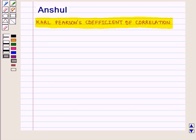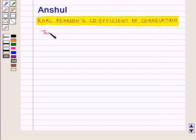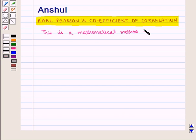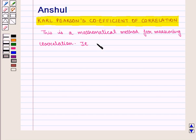Hello and welcome to the session. In this session we are going to discuss Carl Pearson's Coefficient of Correlation. This is our mathematical method for measuring correlation. It is also known as the quantitative method of measuring correlation between two variables.